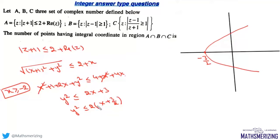If you put x and y as 0, it satisfies this inequality. That means it will have all the points lying inside this parabola.